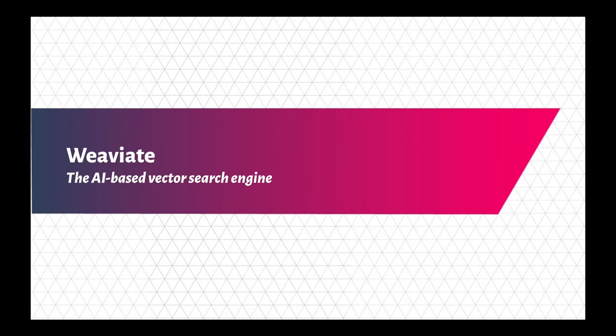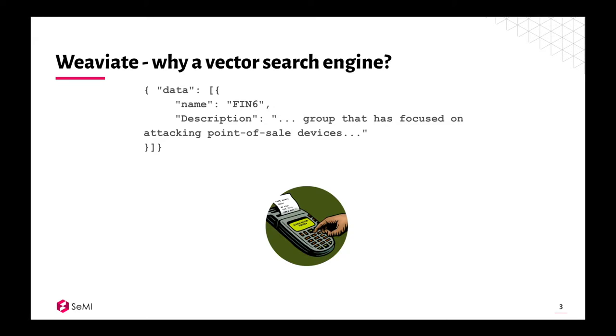Weaviate is a vector search engine and a full-featured database. The most important difference between traditional search engines and vector search engines like Weaviate is that Weaviate focuses on the vector representation of the data stored within it, and those vector representations are given to it based on machine learning models.